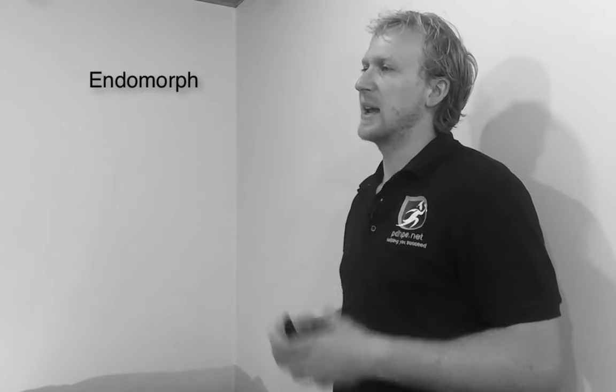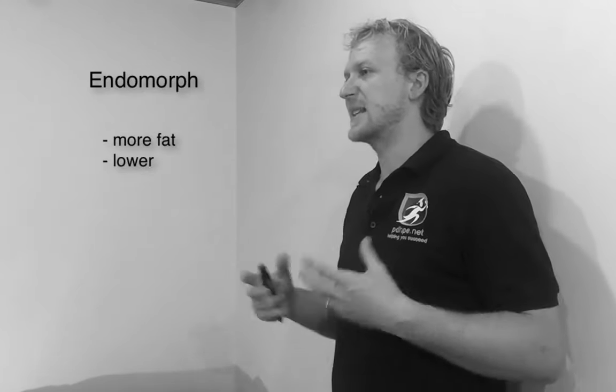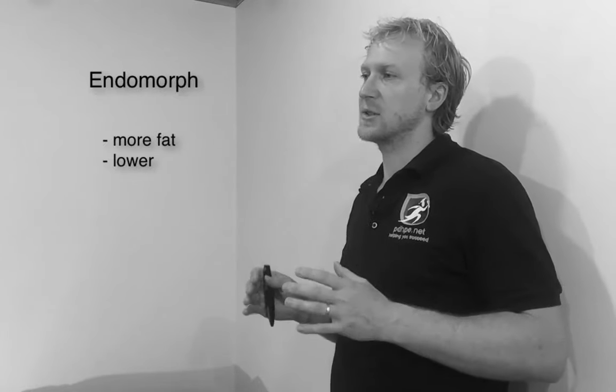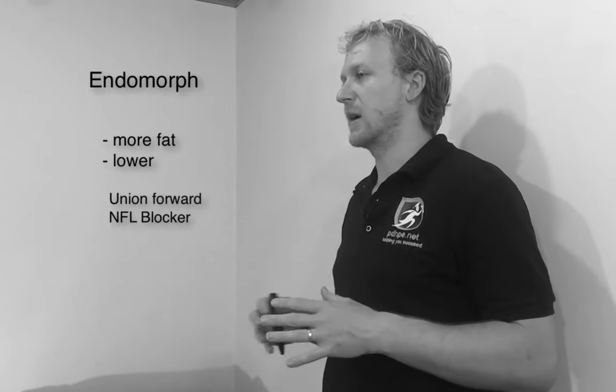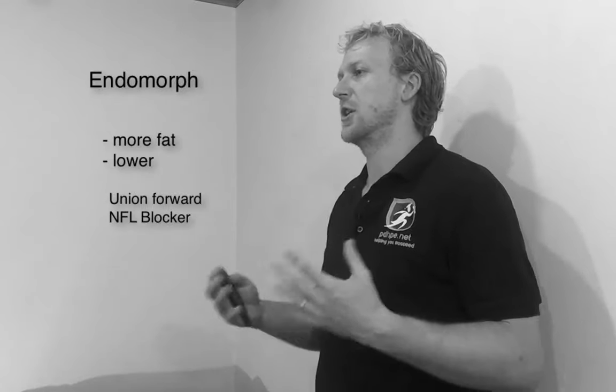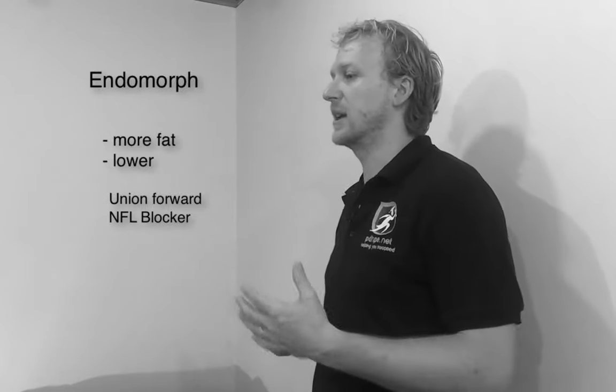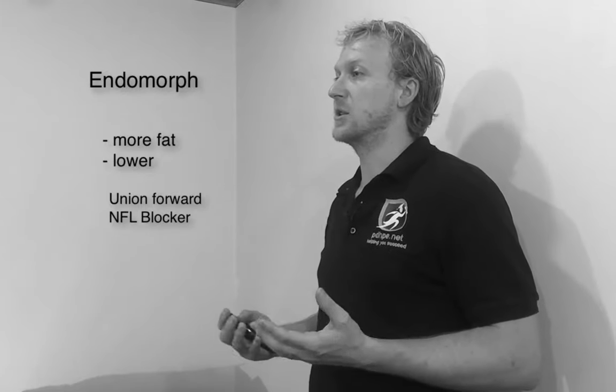A mesomorph is someone who is muscular and toned and might be better suited to sports such as AFL, rowing, or bodybuilding. Our last somatotype, the endomorph, tends to carry weight a bit lower and be a little heavier, suiting sports like rugby league or rugby union as a forward — particularly union, which favours a lower centre of gravity. They might also be well suited to being a blocker in NFL. Hereditary aspects can really influence the rate at which skills are acquired and the level to which they're acquired.